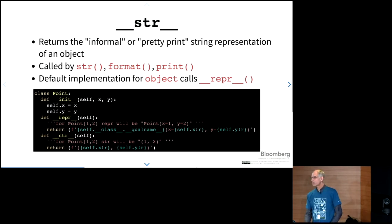A closely related special method is Dunder str. This returns an informal or you could think of it as a pretty print string representation of your object. But this is the one that is called by the str constructor, also by format and by print. But you don't necessarily need to implement this on your class because the default implementation that's inherited from the Python base object will call Dunder repr as its default implementation.